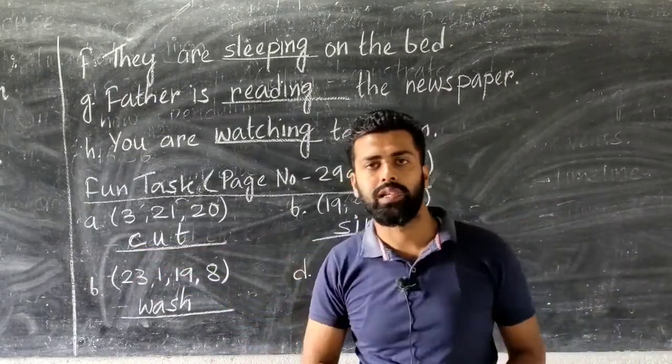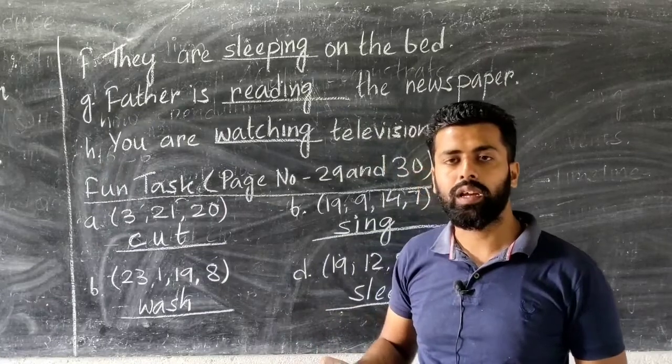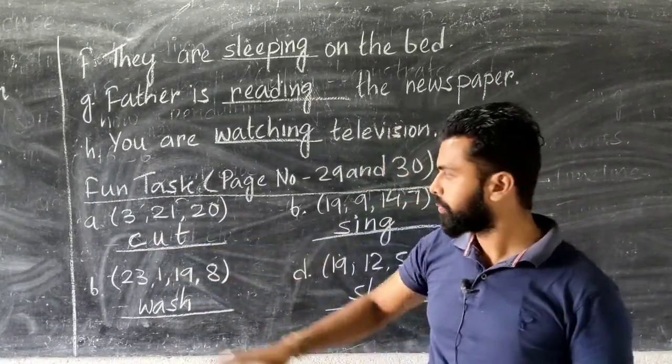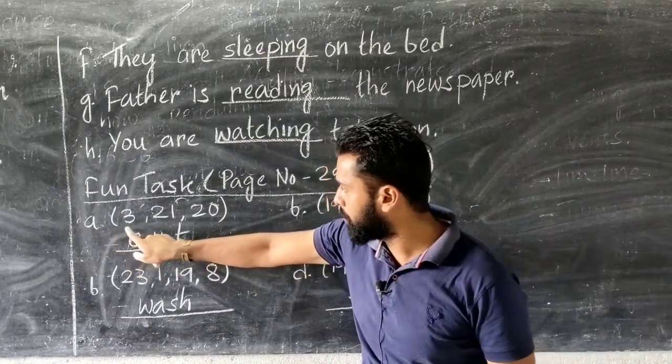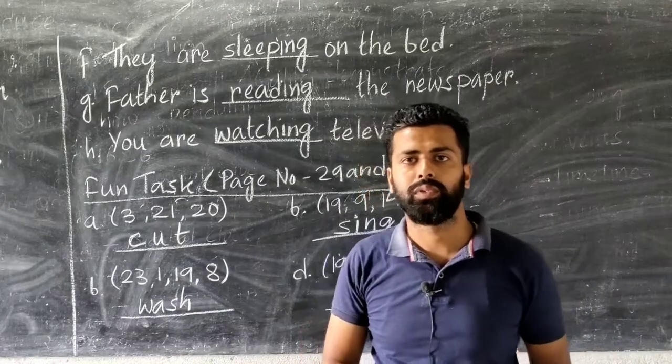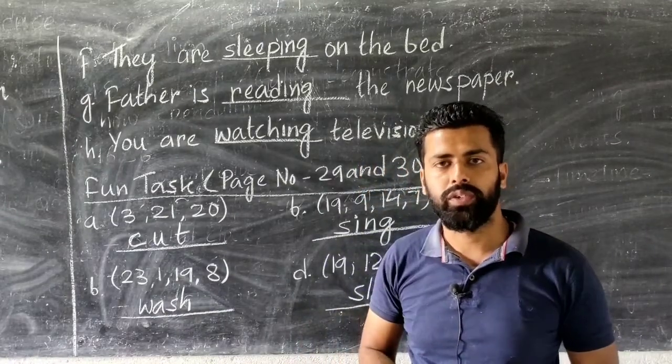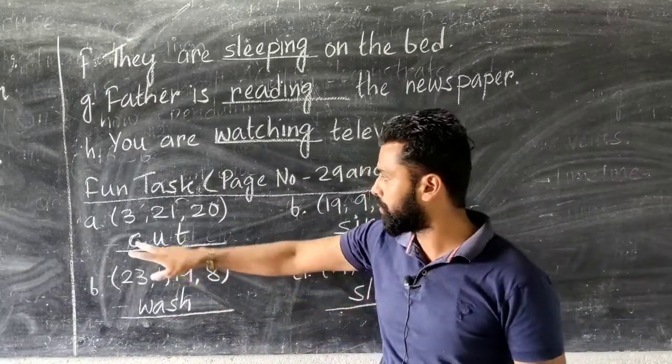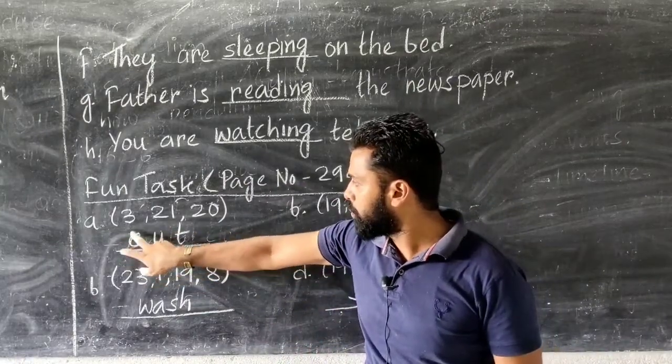You see here the codes are given: 3, 21, and 20. When you go through that fun task, you will find that the positions of the letters are given there. 3 is the position of C, so that's why we have written C here. Then 21 is the position of letter U, so we have written U.